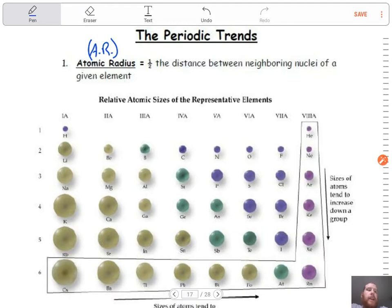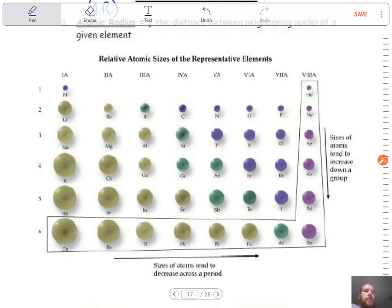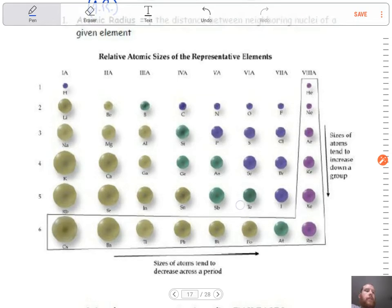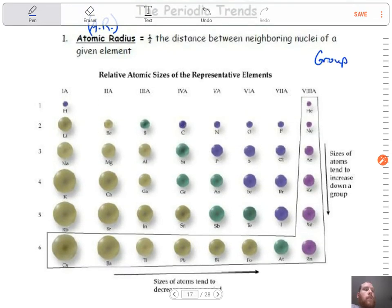This is the general idea—it's not every element on the periodic table, but it shows the general trends. Every single trend we talk about is going to have two different ways we're going to think about it. We're going to talk about the group trend and we're going to talk about a period trend.